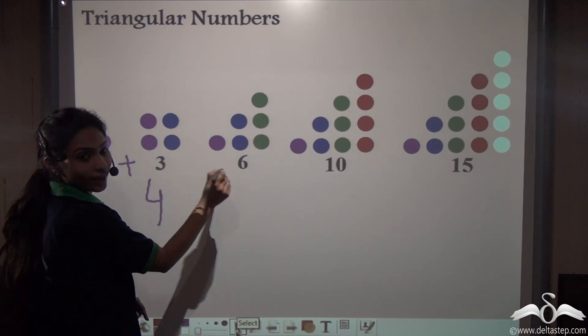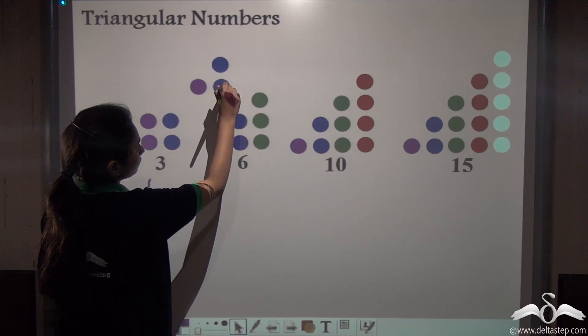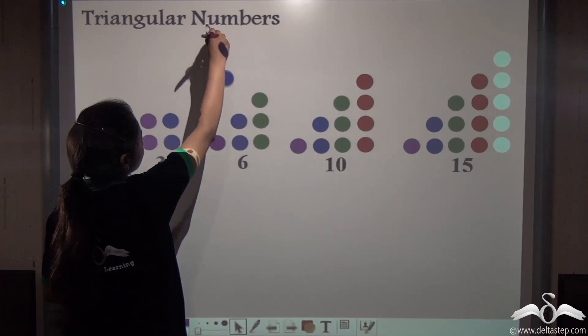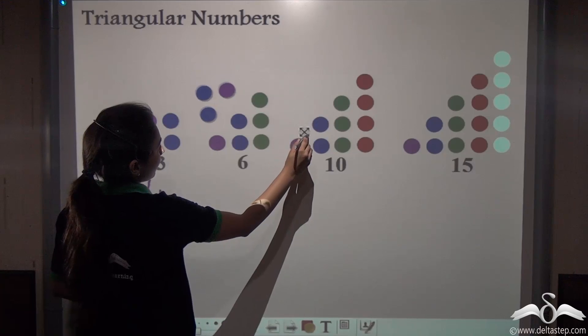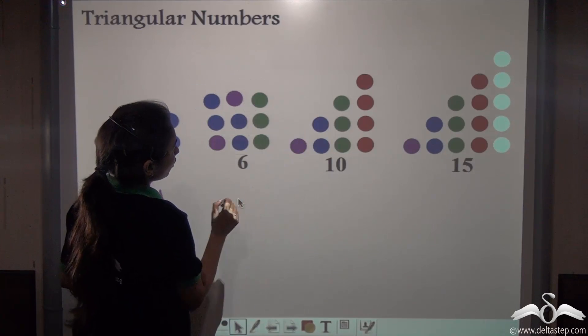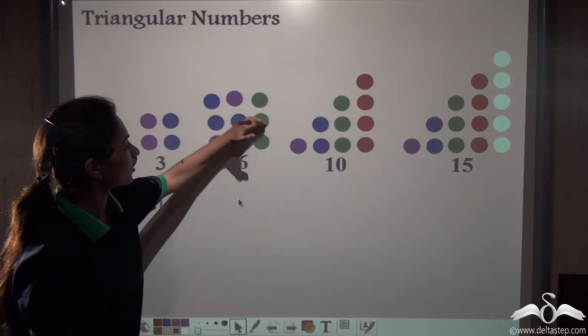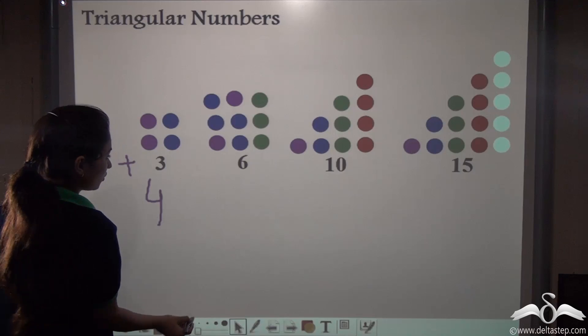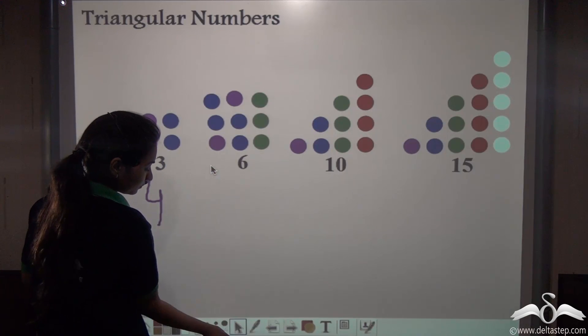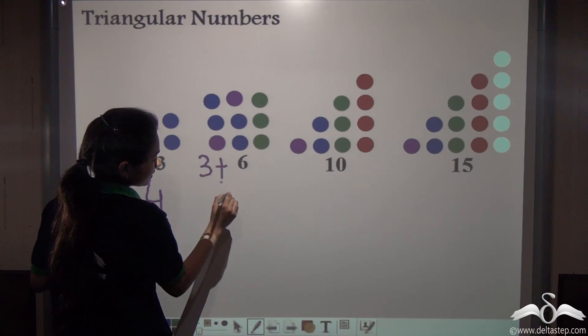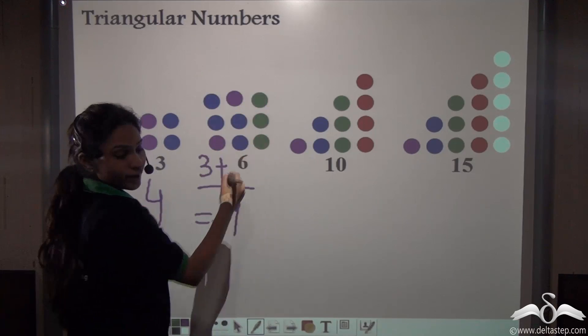Now, adding three and six. Rotate it and add it. See, what do you get? Again, a perfect square. So, I can say three plus six gives me nine. That is a perfect square.